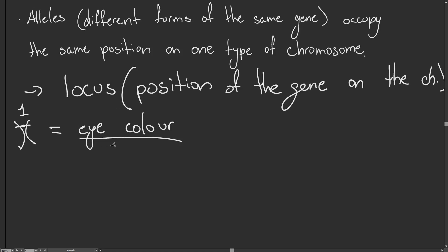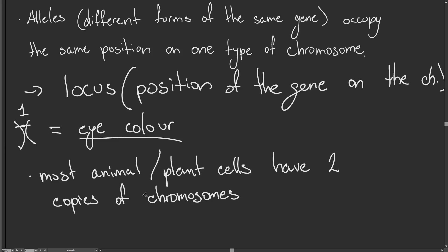Most animal and plant cells have two copies of each type of chromosome. This means that if a chromosome has information about eye color, it's going to be on both copies. Not only is the eye color gene on both copies, but the position is also the same—they always have the same locus. The genes at the same locus can be copies of the same allele, but they can also be different alleles, even though they occupy the same position.